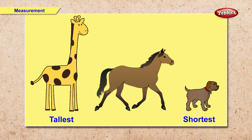And now we have a giraffe, a horse and a dog. So which is the tallest animal? Right. Now let us see tallest. And the shortest animal? Right. Dog is the shortest animal.